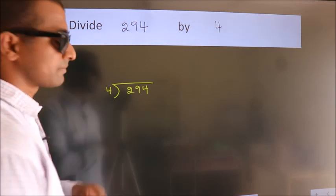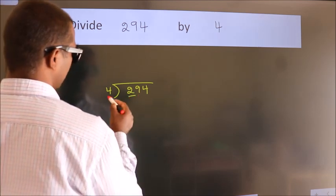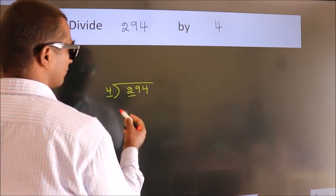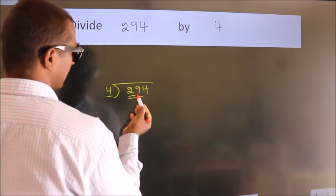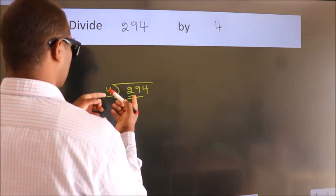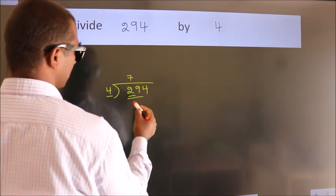Next. Here we have 2. Here 4. 2 is smaller than 4, so we should take 2 numbers. 29. A number close to 29 in the 4 table is 4 times 7 equals 28.